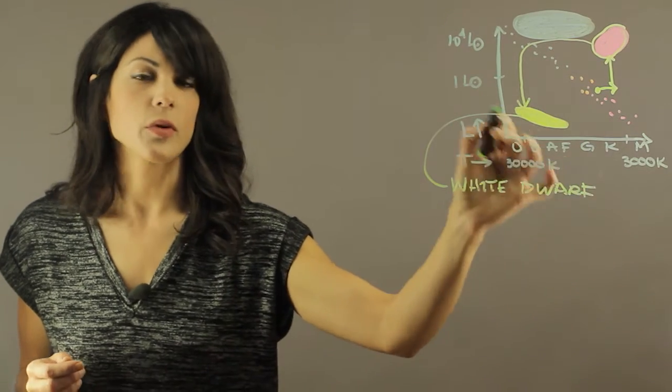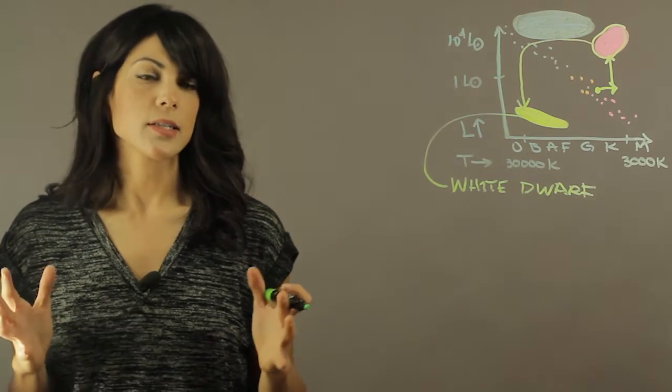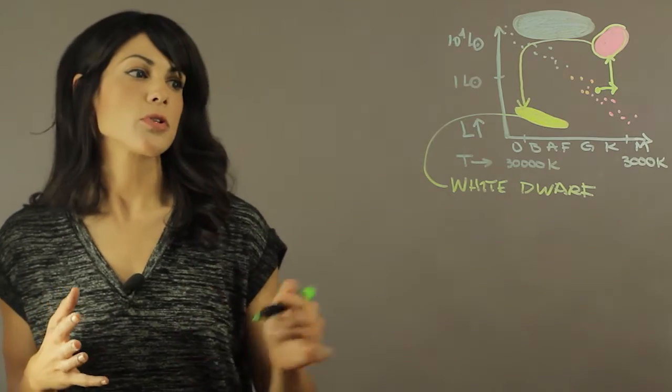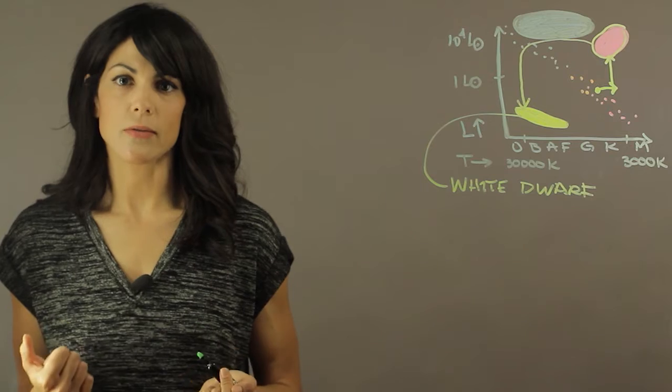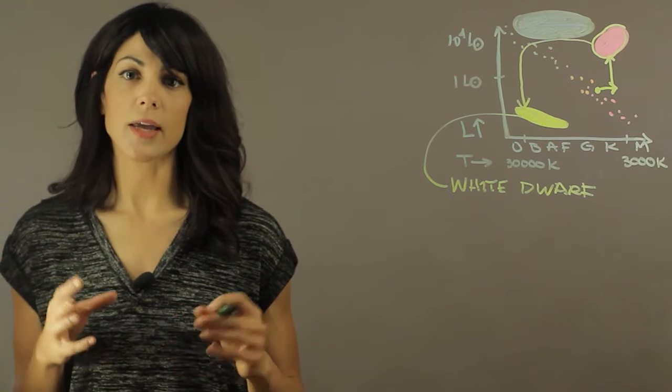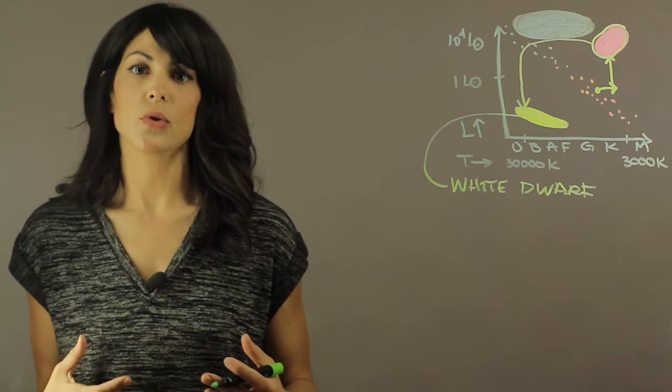Okay, so now that we have the white dwarfs located in the HR diagram, let's think about the temperature. The temperatures range from 30,000 degrees Kelvin to about 6,000 degrees Kelvin. So it goes from very hot to sort of cold and eventually loses all of its heat.